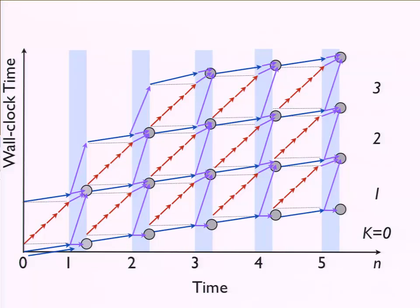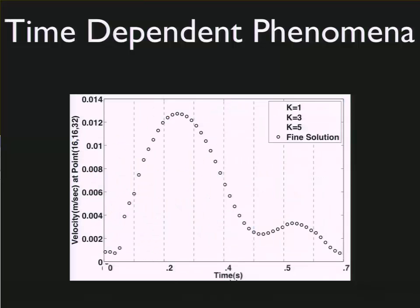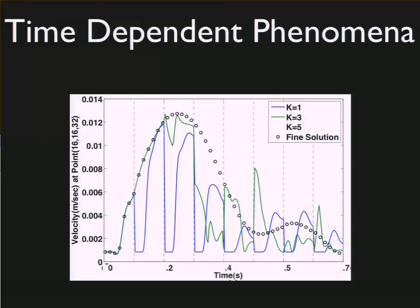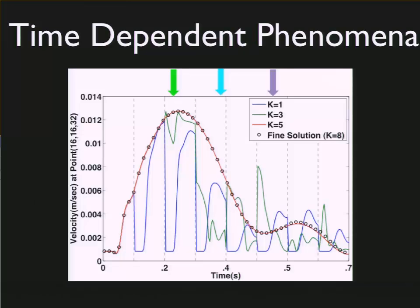You continue doing this for many iterations until you get the equivalent of having just run the fine solver serially. The goal is to do this in fewer iterations than it would have taken to run the fine solver entirely — we refer to each iteration as different k-levels. To give a flavor of the results: we can recover time-dependent phenomena using parallel-in-time techniques. The measured cardiac cycle data from the competition is shown, and at the first k-level iteration you're recovering the behavior and getting fairly close. At k equals three iterations you're getting a lot closer, and at k equals five we're getting really similar to what the fine-grained solver would have produced.